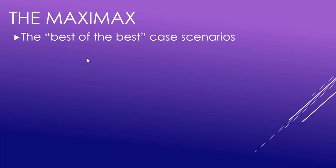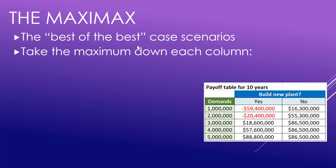Let's look at what's called the maxi max — the best of the best case scenarios. To get that, you take the maximum down each column, each column representing a decision. In this example, the best of the best case scenario is where we stand to make the most money. Is it to build the new plant or not? We take the maximum down each of these columns.